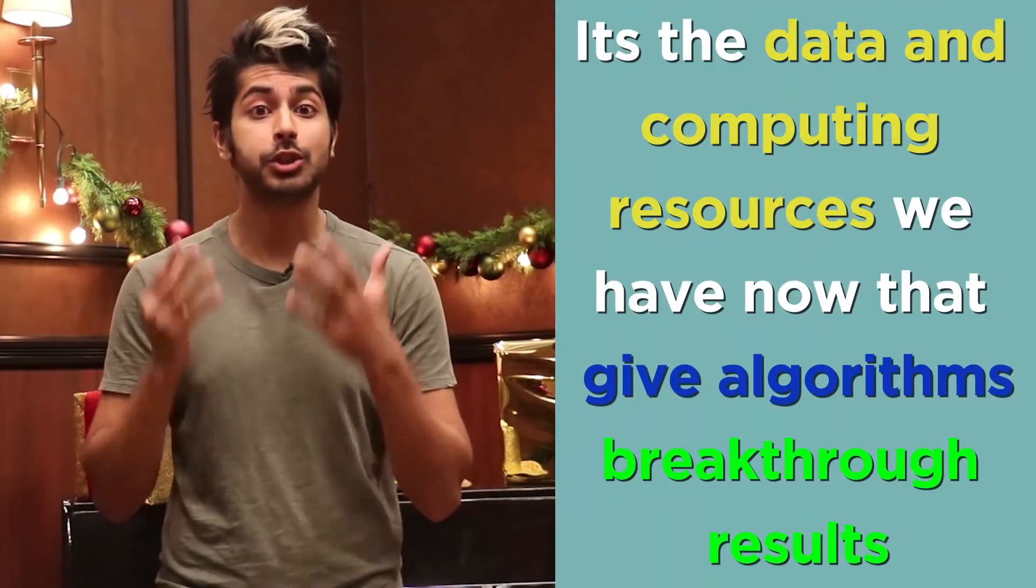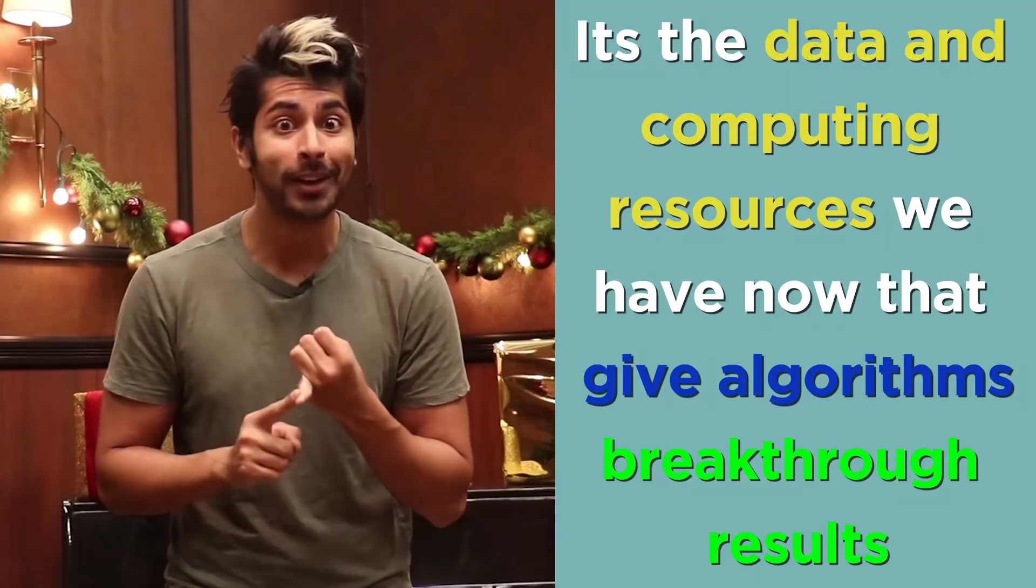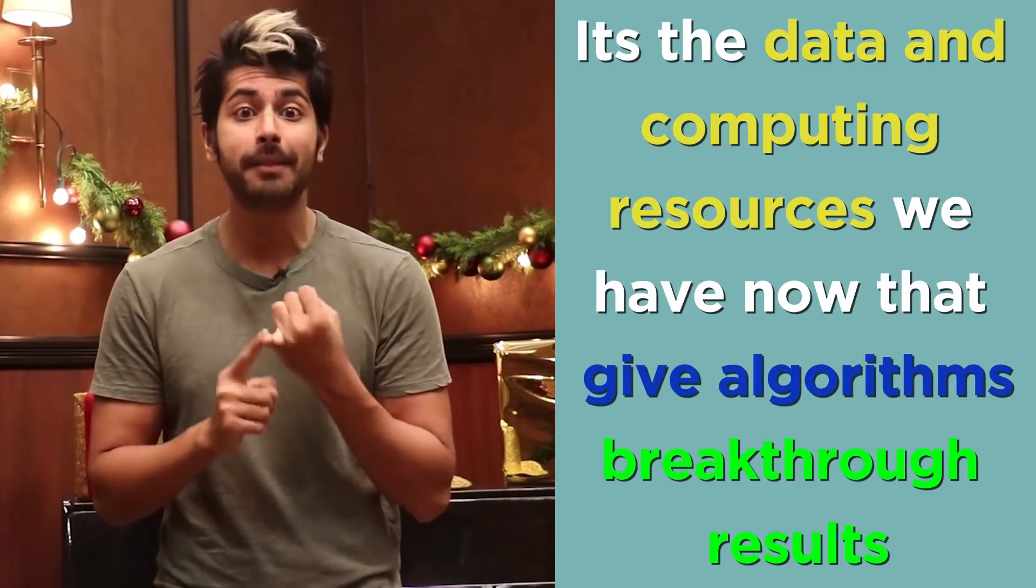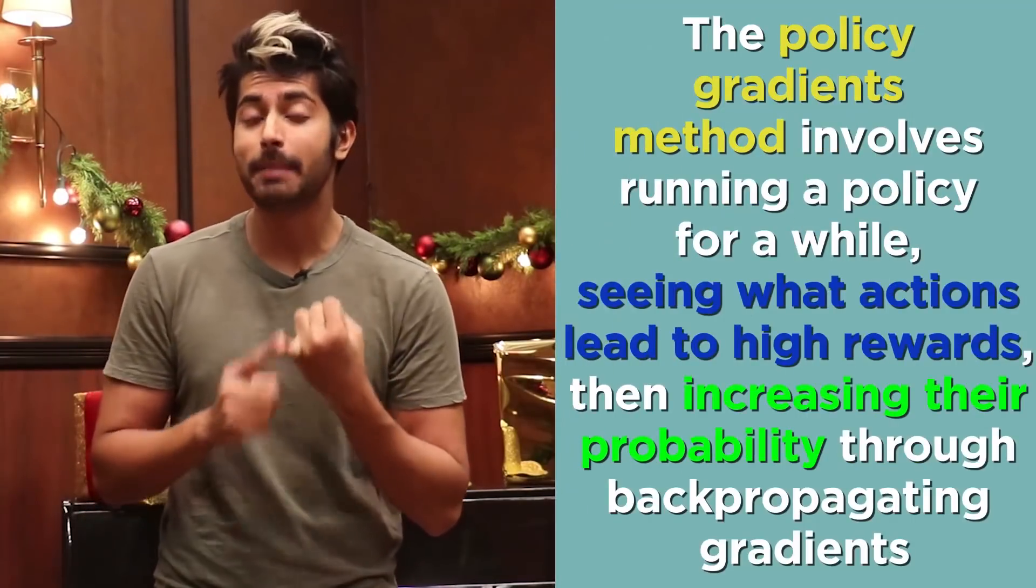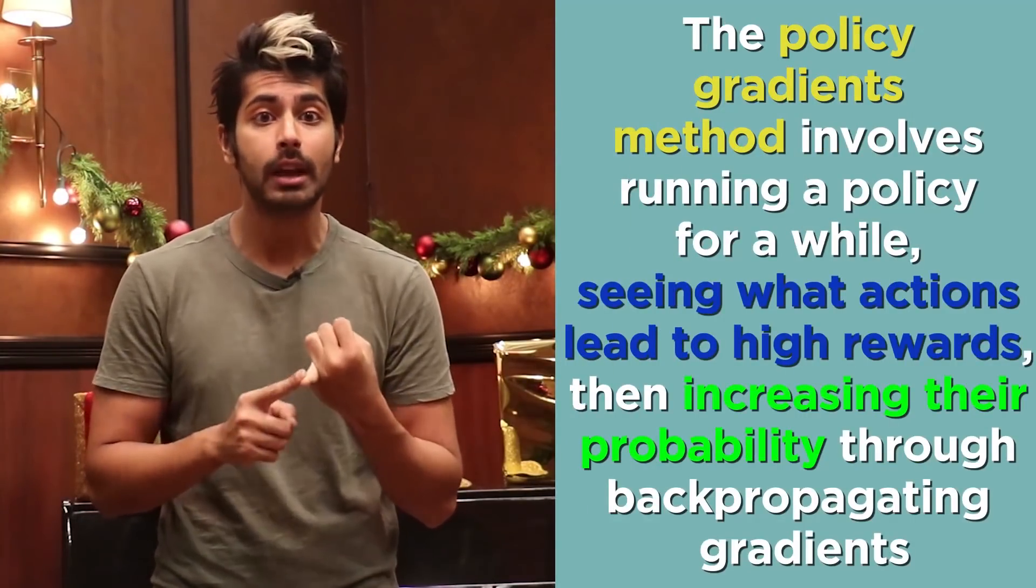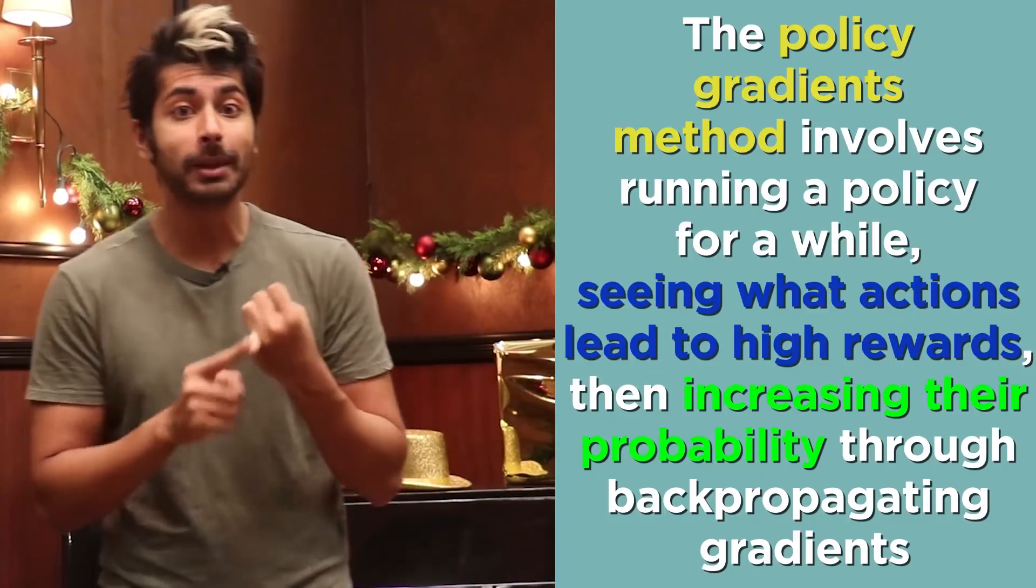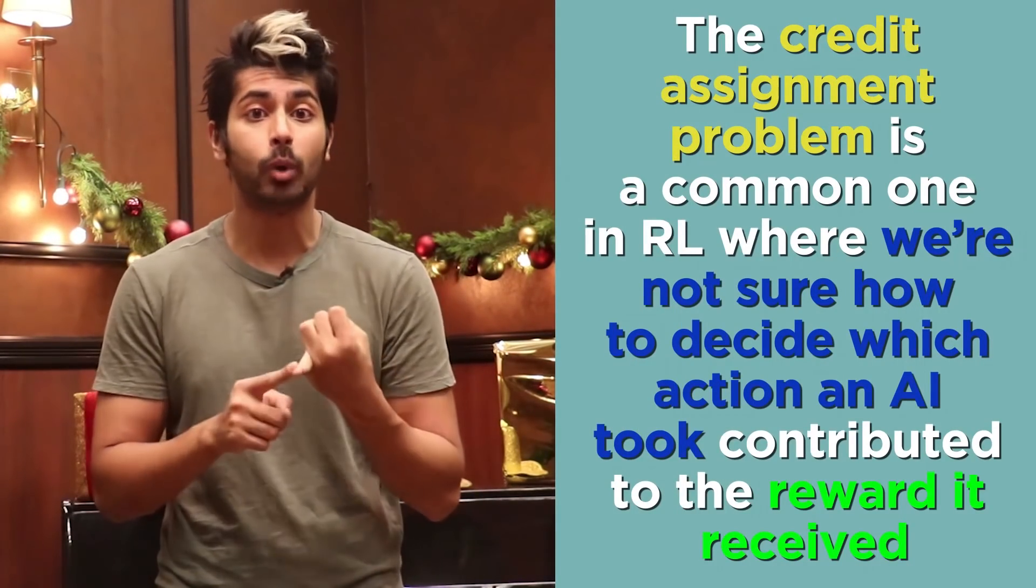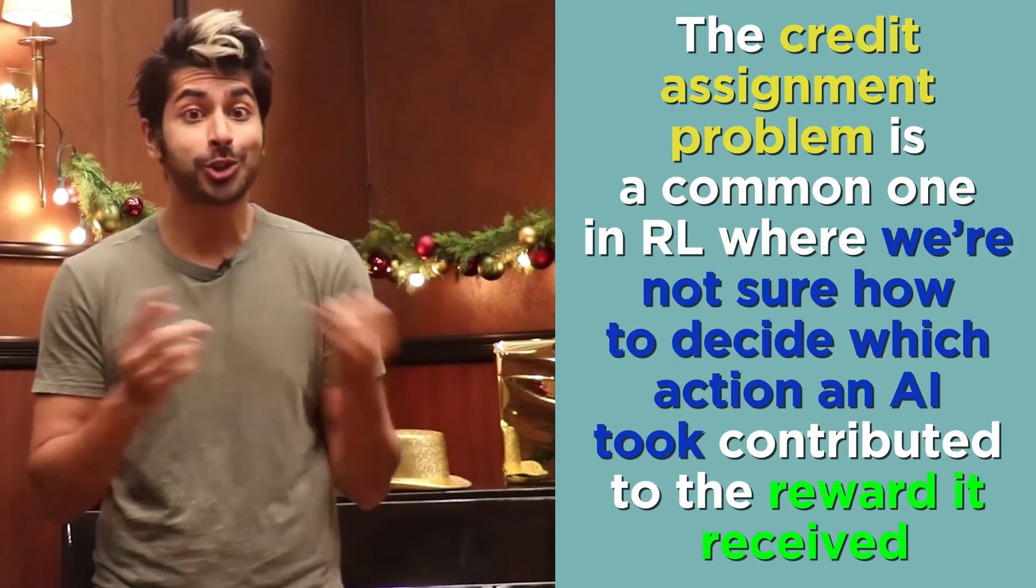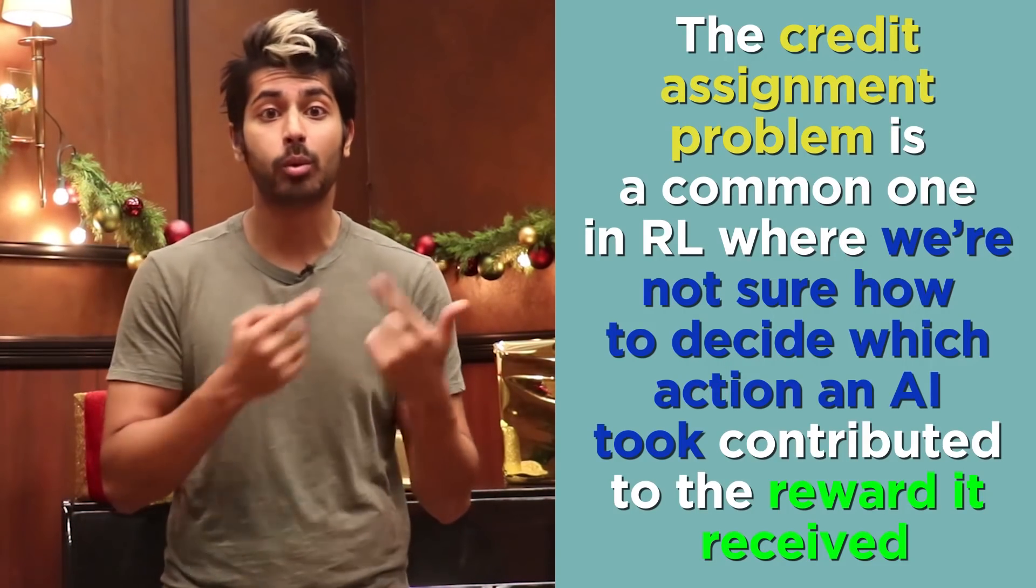Three things to remember from this video. None of the algorithms that have achieved state-of-the-art results out of DeepMind are novel. It's the data and the computing resources we have now that gives them breakthrough results. The policy gradients method involves running a policy for a while, seeing what actions lead to high rewards, then increasing their probability through back-propagating gradients. And the credit assignment problem is a common one in RL where we're not sure how to decide which action an AI took contributed to the reward it received.